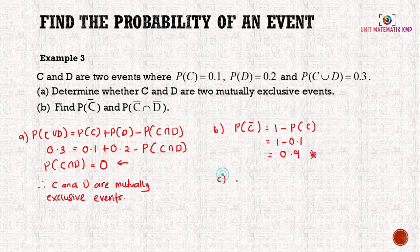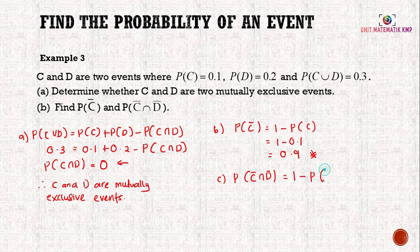Question C asks for P(C̄∩D̄), the probability of neither C nor D. We take the total probability 1 minus P(C∪D): 1 - 0.3 = 0.7.